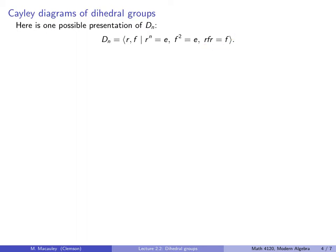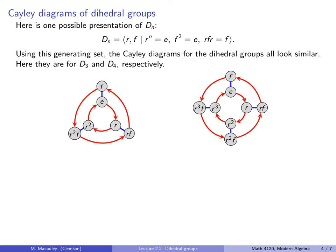Let me show you a Cayley diagram. If we use that choice of generators, this is D3 — we've seen this. And we've seen why this holds: if we start at the identity, R, F, R equals F. But this also holds for all of the other dihedral groups as well. This is D4, which I don't think we have seen yet. So this is R, F, R equals F.